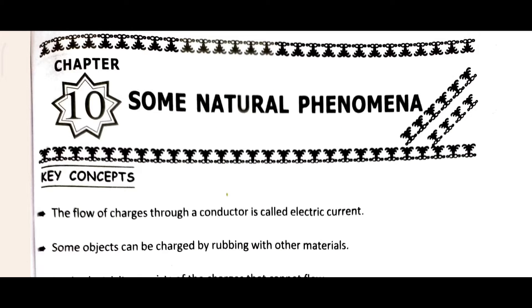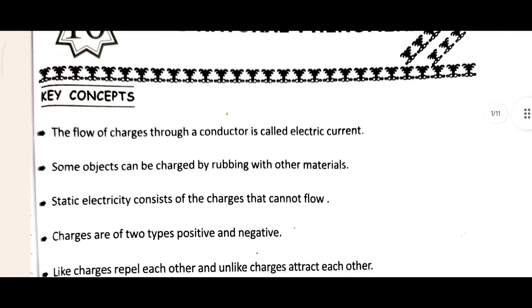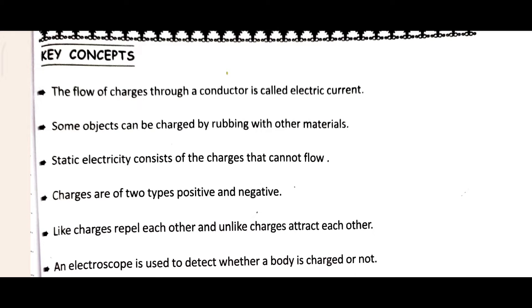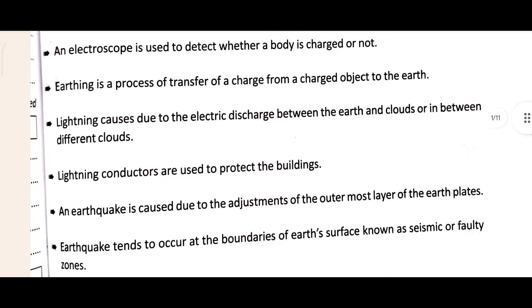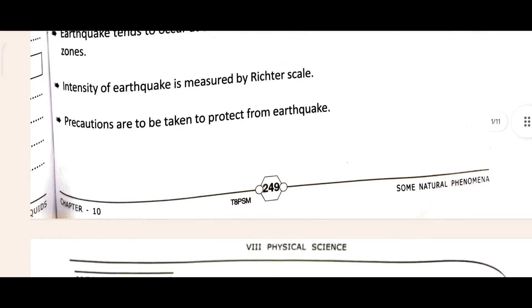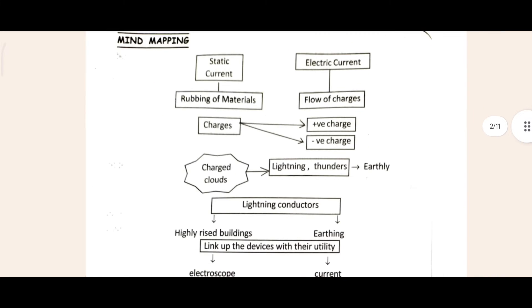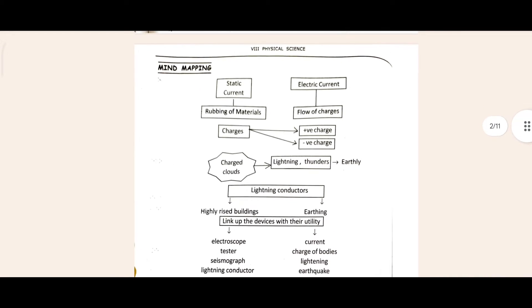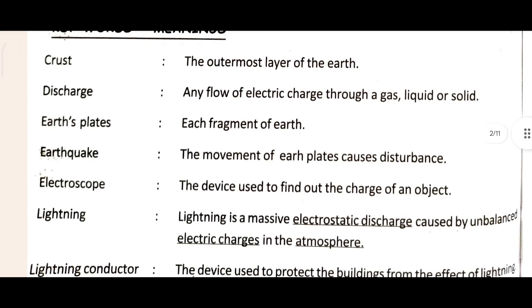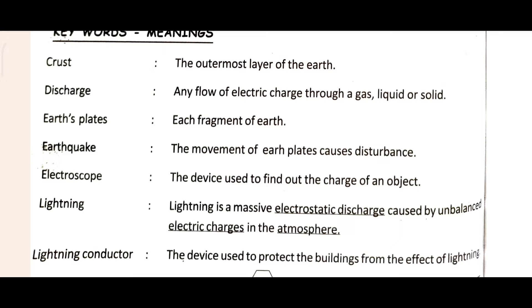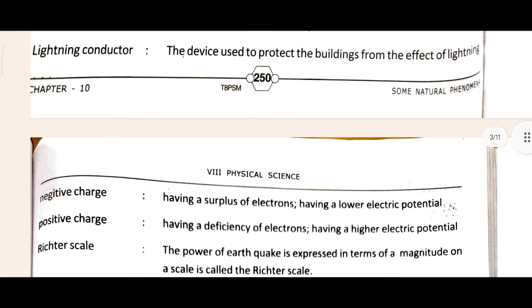This is Chapter 10, 'Some Natural Phenomena.' Let's see the key concept first, then we will move to question and answer. There is also a brain mapping section - to understand any chapter better, you have to understand the brain mapping, also called mind mapping. Our keywords start from here: cross discharge, earthquake, electroscope, lightning, and so on.